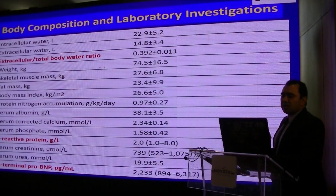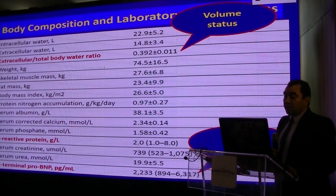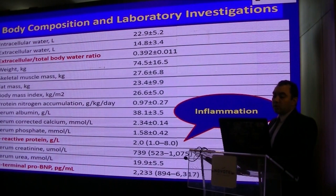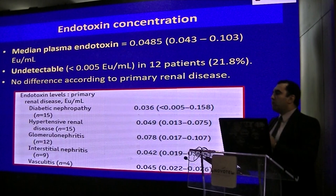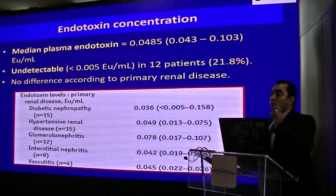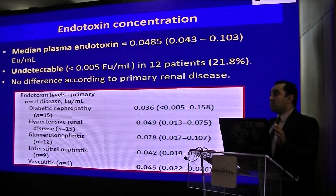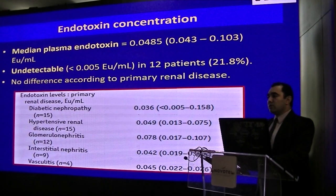Regarding body composition: the extracellular to total body water ratio and the overhydration parameter were surrogates for volume status, and our patients were euvolemic. C-reactive protein had a median of 2, ranging from 1 to 8. The answer to the first question was that the median endotoxin concentration was 0.048, or approximately 0.05 — which, if you recall, was the level detected in the control group in the study I highlighted, and also lies between the two reference values detected in healthy adults. Endotoxin was undetectable in 12 patients, about one-fifth of our population. There was no difference in endotoxin level according to primary renal disease. So, we did not detect significant endotoxin elevation in peritoneal dialysis patients.